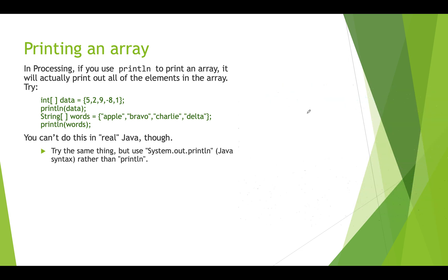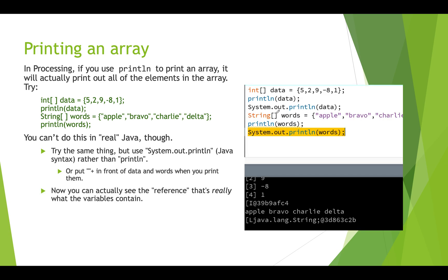In Java, passing an array directly to println wouldn't work the same way. If you use system.out.println instead of Processing's println for both an int array and a string array, what you'll see is that Processing prints out the values, while Java prints out the memory address of where that array is stored on the heap. You probably don't ever want to use the Java version for this — use Processing's println function most of the time.